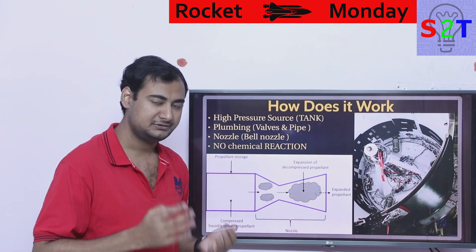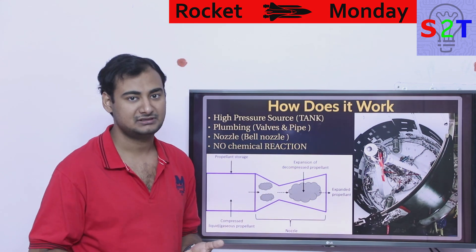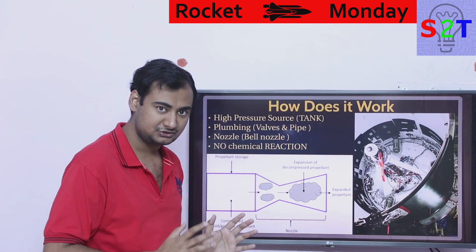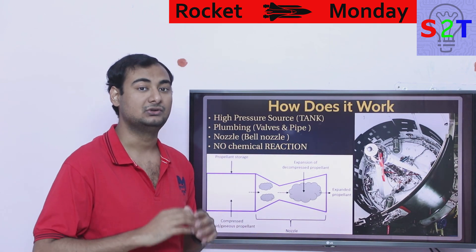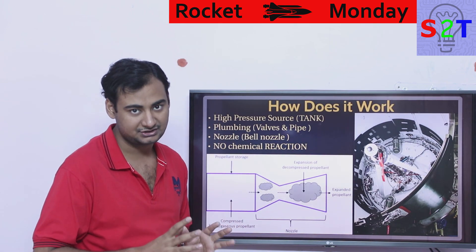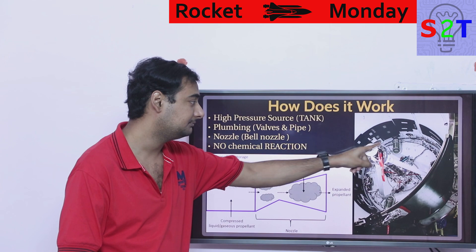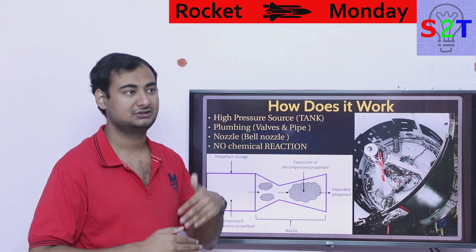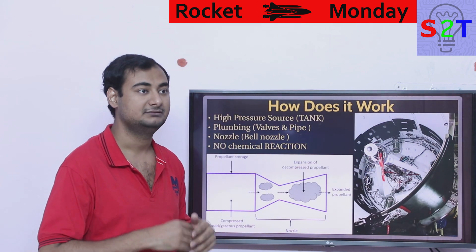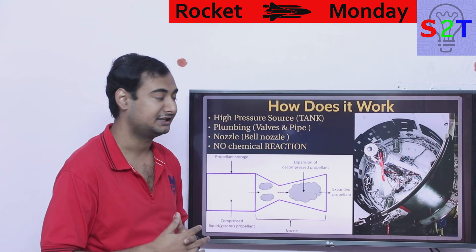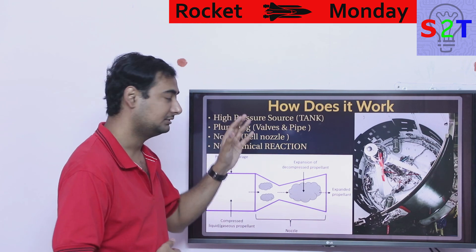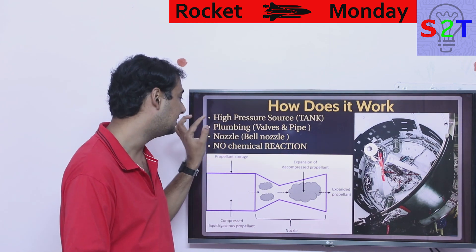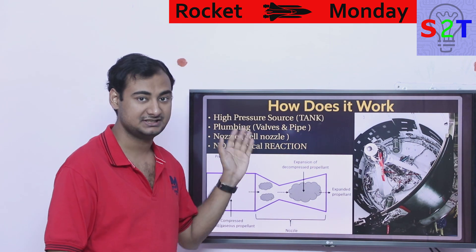You take a high pressure source — generally a tank pressurized with nitrogen, sometimes helium or neon, but generally nitrogen — pressurized to ludicrously high pressure, as long as the tank can withstand it. Generally 3,000 to 10,000 PSI depending on your design requirements. That's part number one: the pressure source.